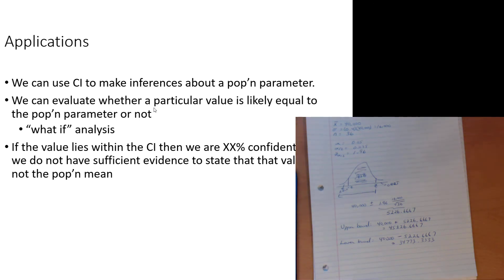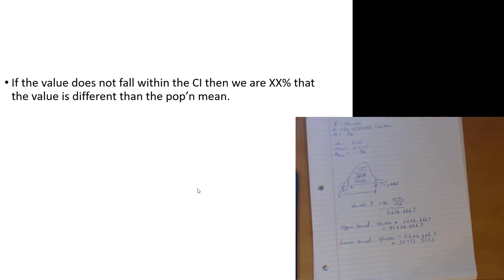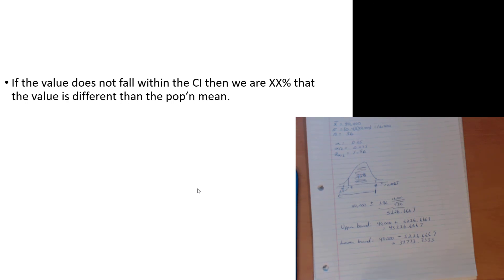If someone jumps in and says they're sure the mean is $46,000 because their folks are really producing — now we have our boilerplate language because 46,000 lies outside the interval. We can say: we're 95% confident that 46,000 is not the population mean. Of course, we can never say we're 100% certain of anything because there is a range of values outside that interval. But we're 95% confident that, based on our data, 46,000 is not the population mean. And that's simply how that works.